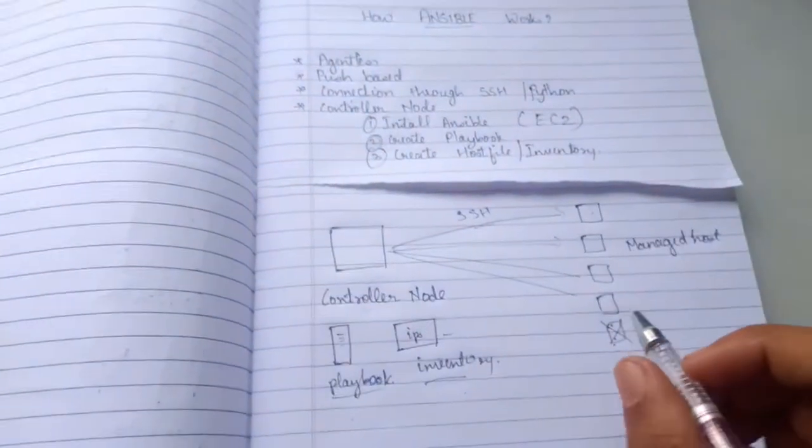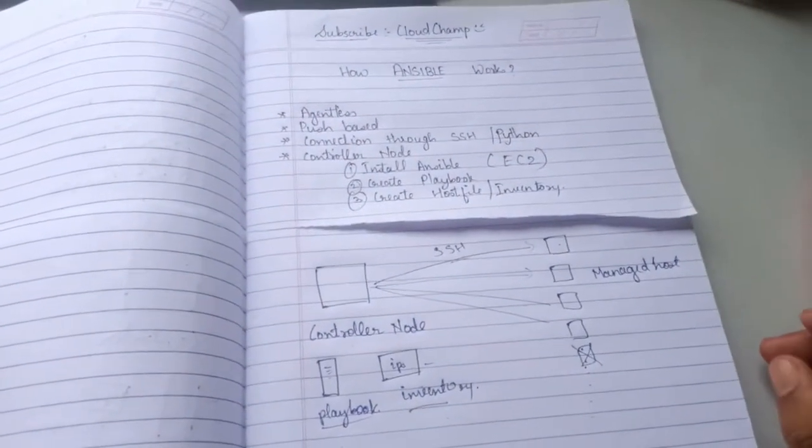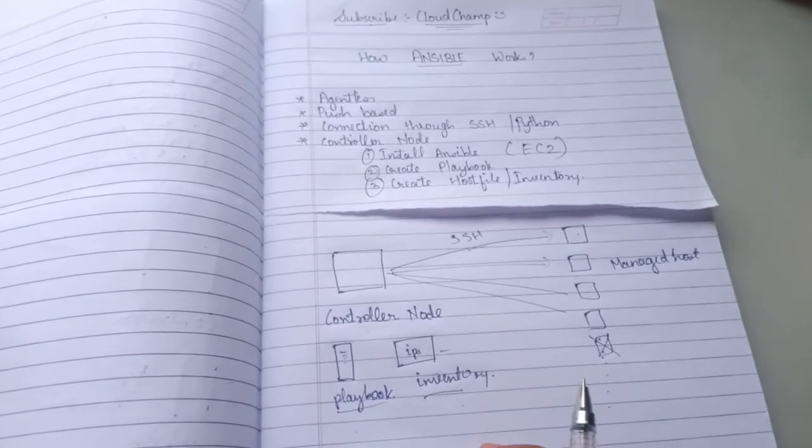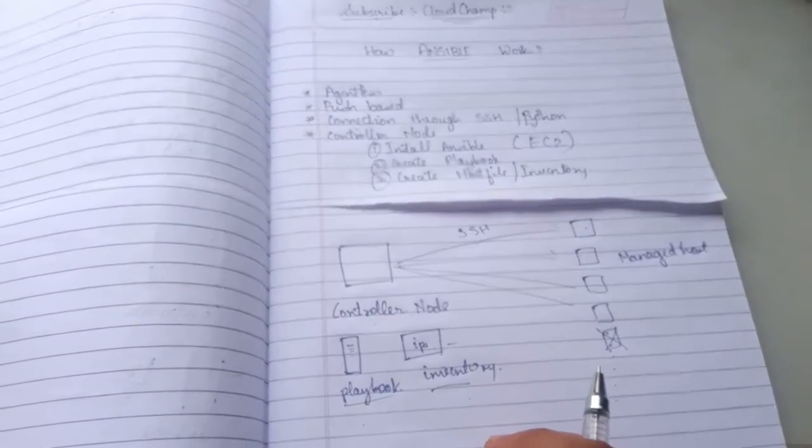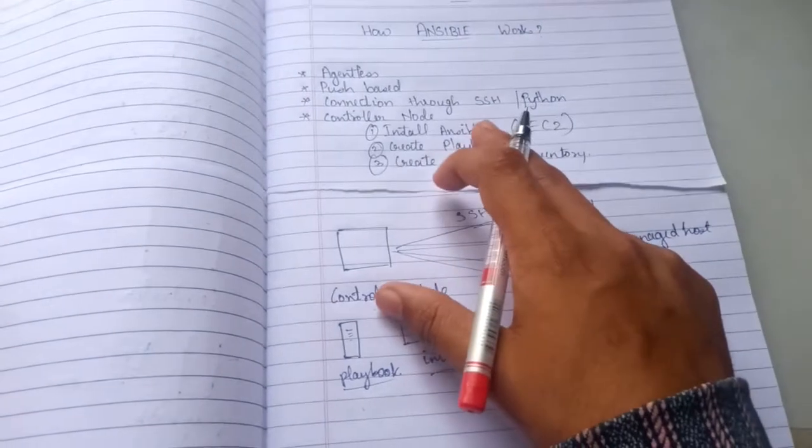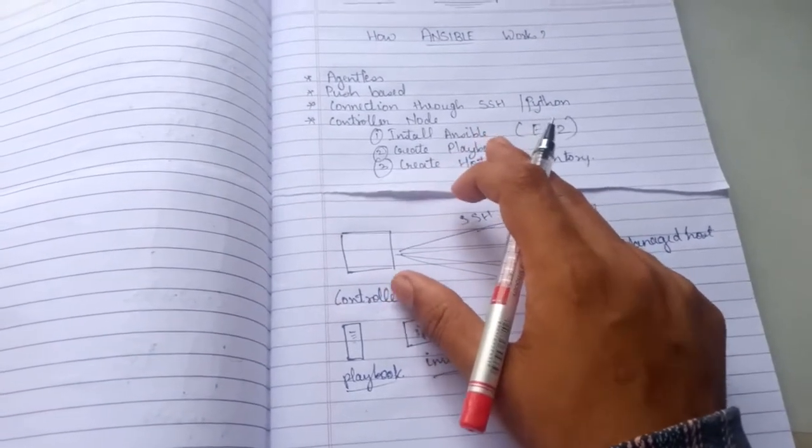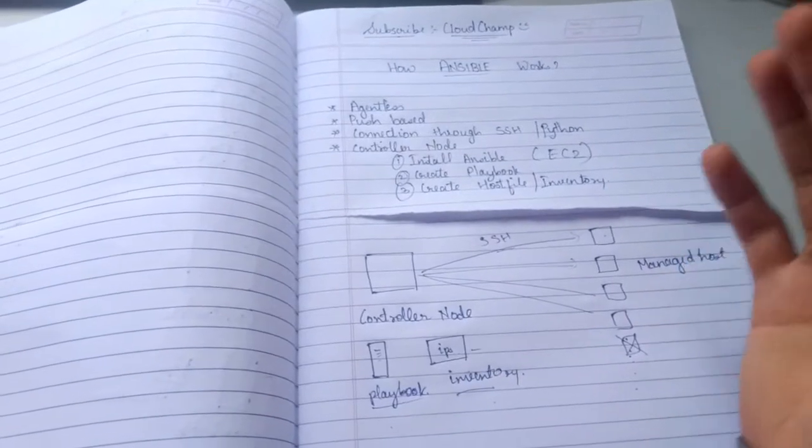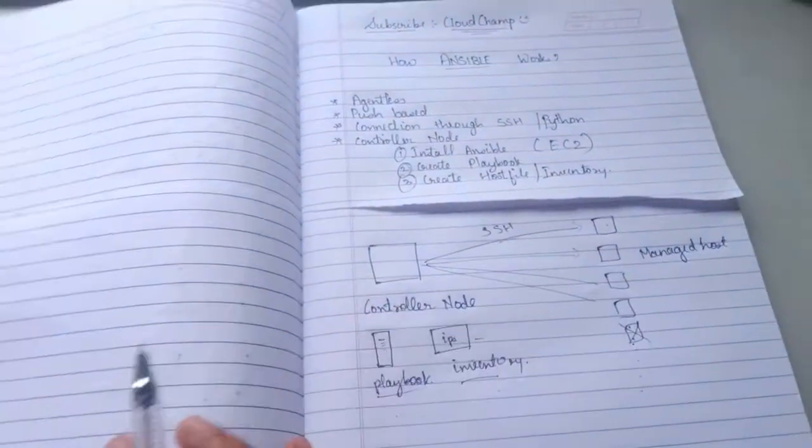So I hope you understood the video and you got the idea how Ansible works. In the next video we are going to install our Ansible. We are going to install Ansible on our Linux EC2 instance. So please like this video and subscribe to this channel and have a good day.